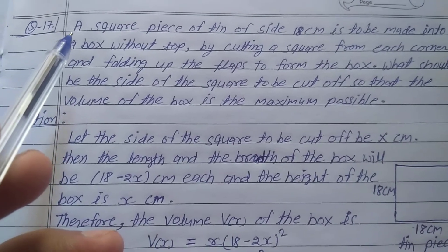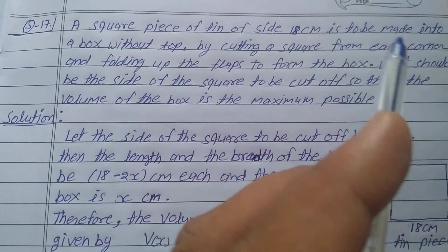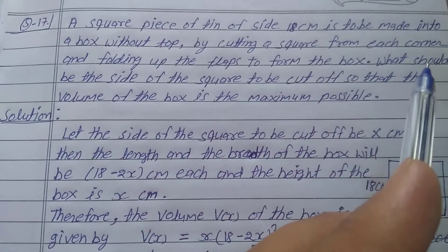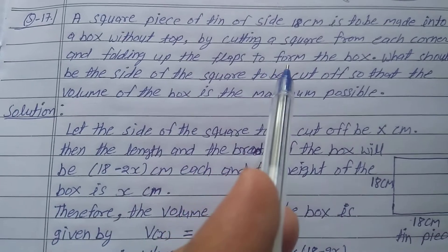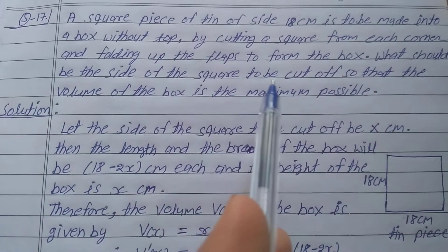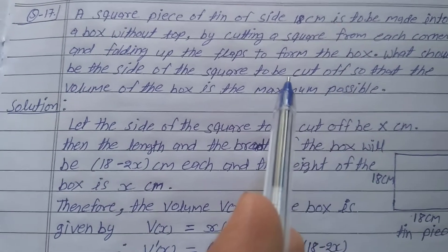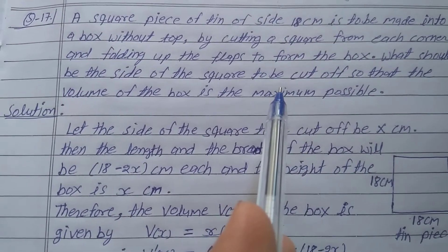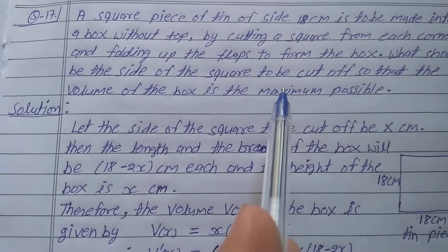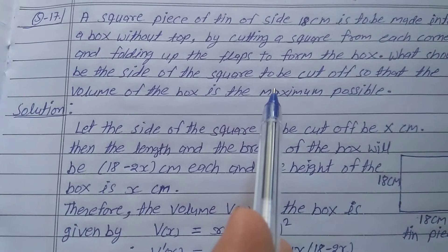Explain question number 17, exercise 6.5, class 12. A square piece of side 18 centimeters is to be made into a box without a top by cutting a square from each corner and then folding up the flaps to form the box. A square piece is given with side length 18 cm. From each corner a square is removed and then the box is formed.